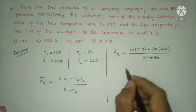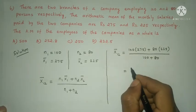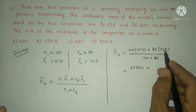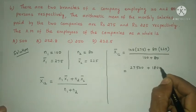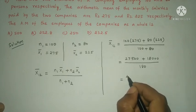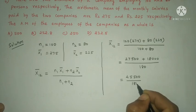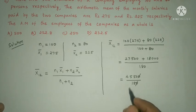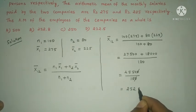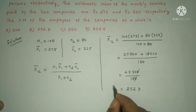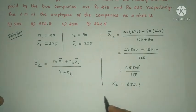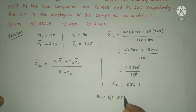Substituting: n₁ + n₂ = 100 + 80 = 180. Numerator = 100 × 275 + 80 × 225 = 27,500 + 18,000 = 45,500. Combined arithmetic mean = 45,500 / 180 = 252.8. The answer is option B: 252.8.